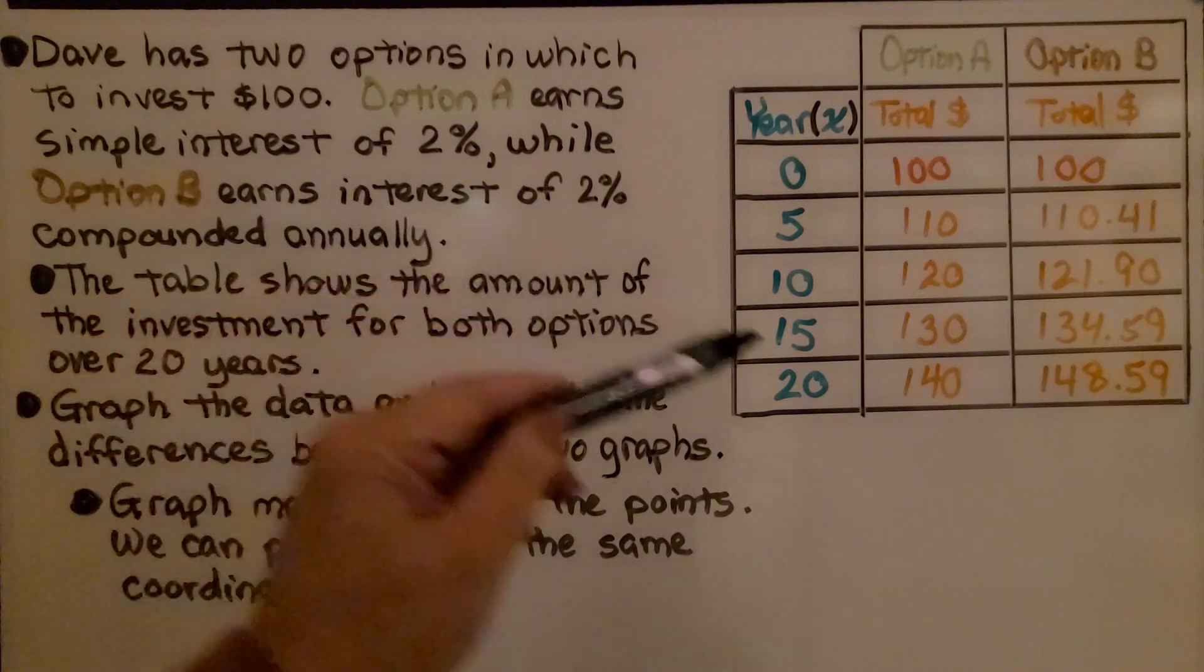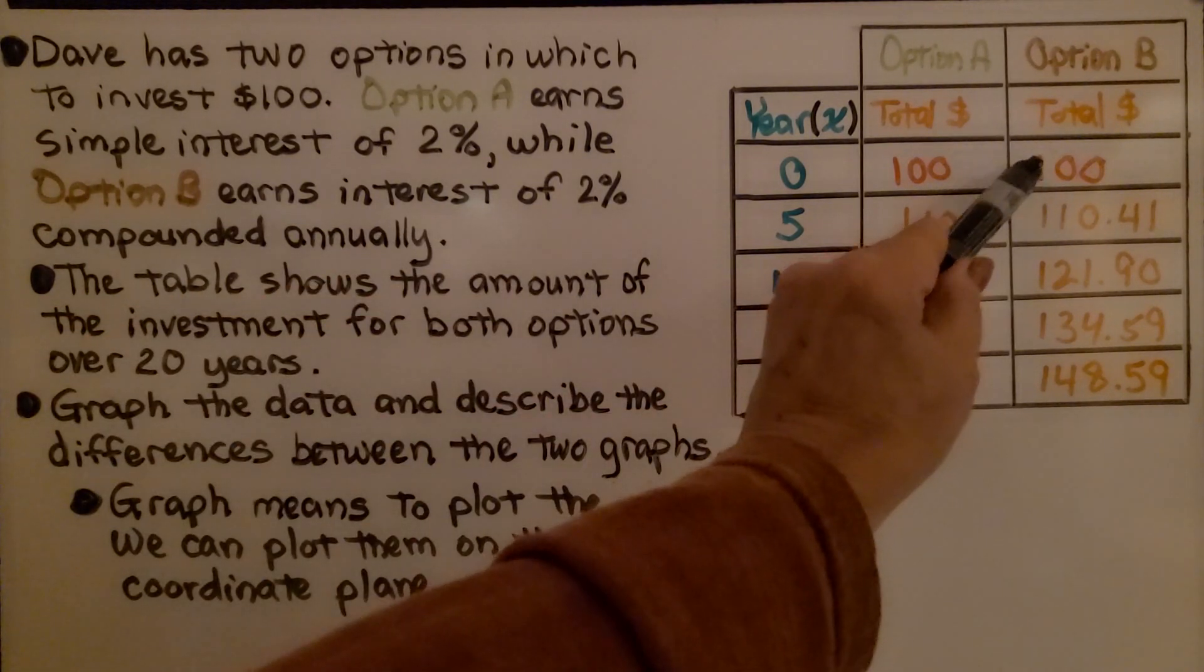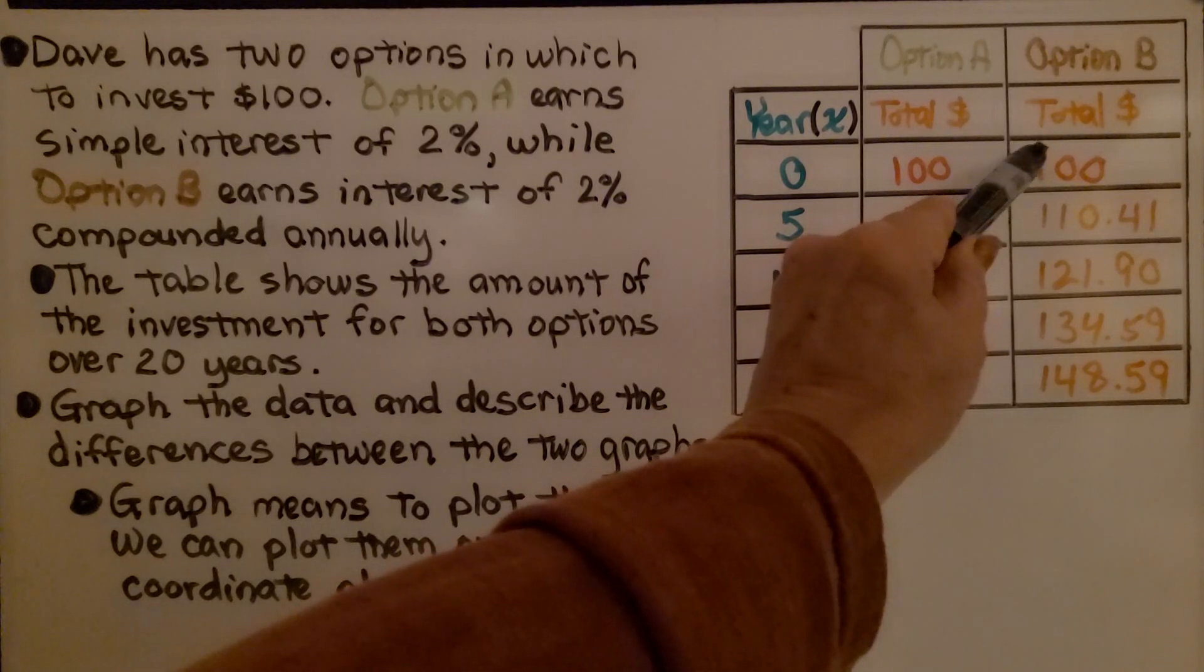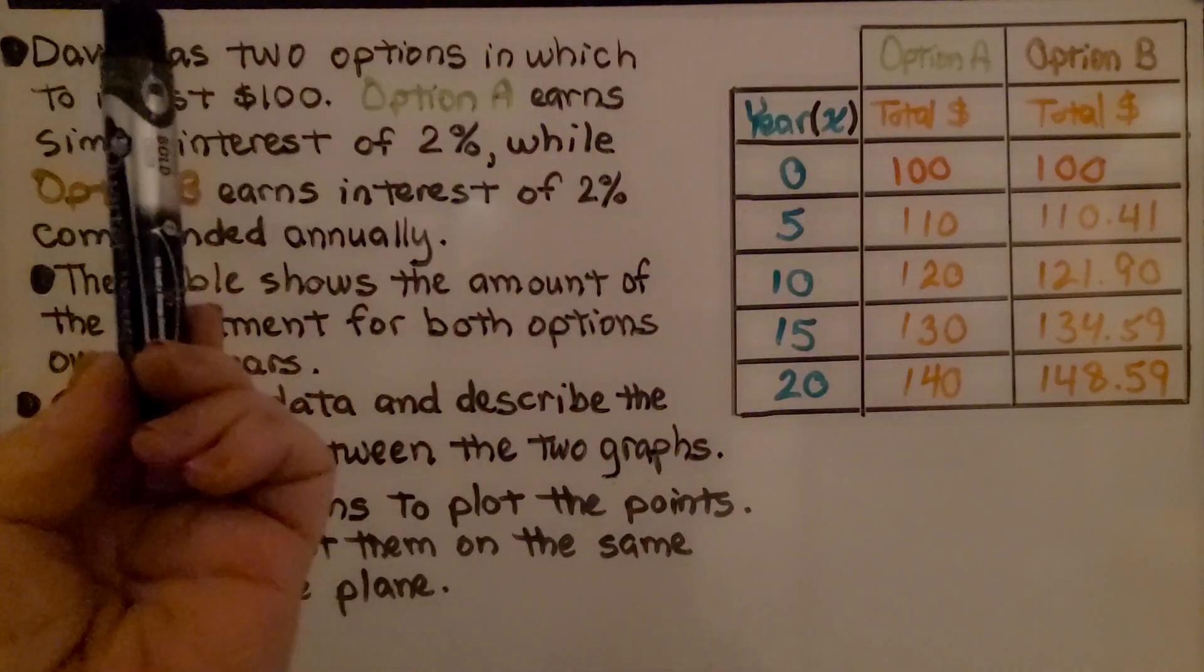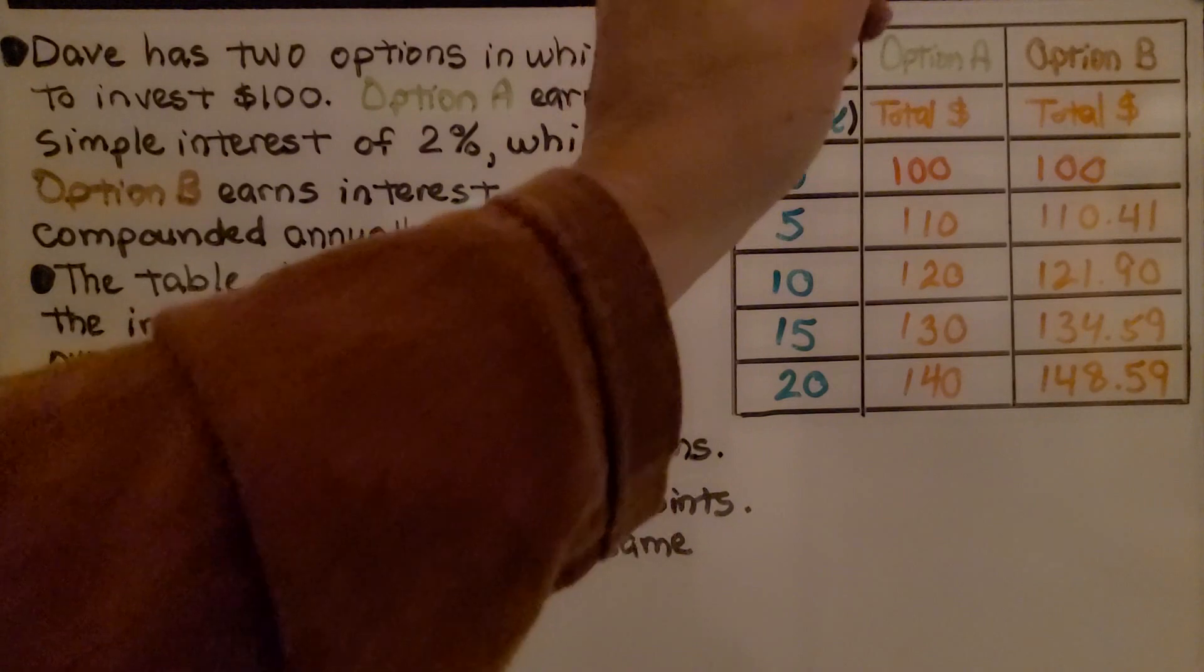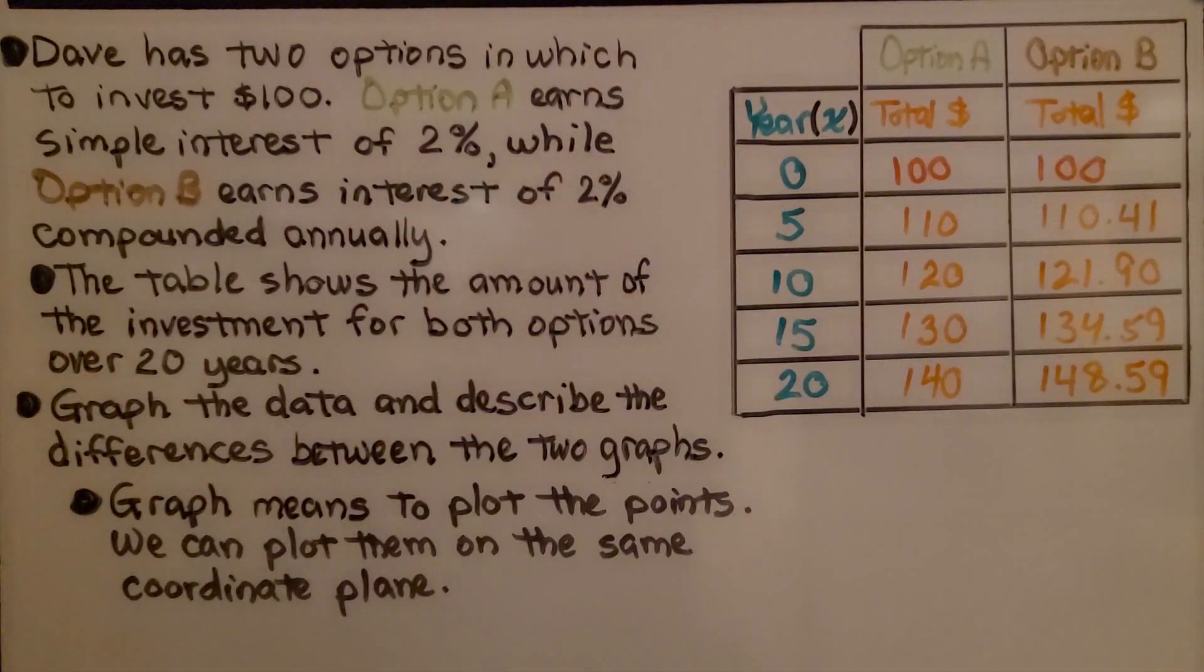For compounded annually, what they do is they take the $100 and they add 2% for the first year. Then the second year, they add 2% to that balance. So the balance is increasing each year by a little bit more.